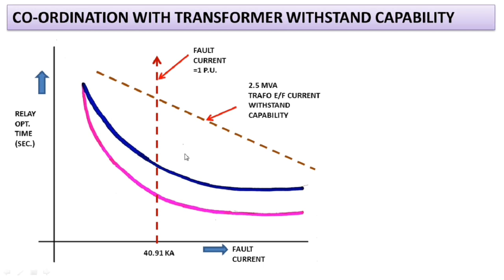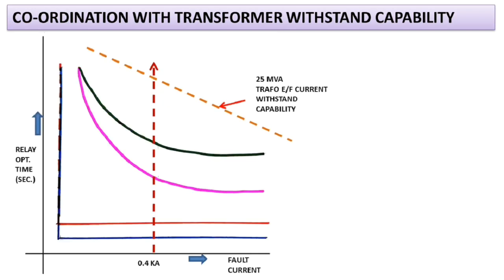The relay curves must be coordinated with the transformer earth fault withstand capability curve. The 2.5 MVA transformer earth fault withstand capability curve must lie above both relay characteristics, and the 25 MVA transformer withstand capability similarly. This is the most important part of relay settings — relays must always operate before the fault exceeds the withstand capability of the equipment.